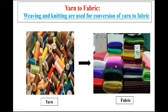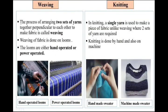Now let us see how yarn is converted to fabric. Weaving and knitting are used for the conversion of yarn into fabric. The process of arranging two sets of yarns together perpendicular to each other to make fabric is called weaving. Weaving is done on looms — either hand-operated or power-operated. In knitting, a single yarn is used to make a piece of fabric, unlike weaving where two sets of yarns are required. Knitting is done by hand and also on machines.